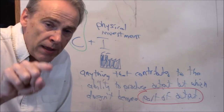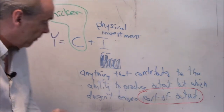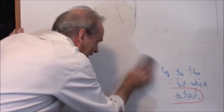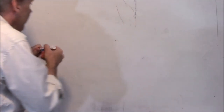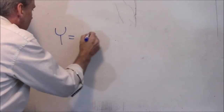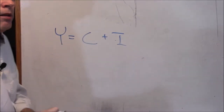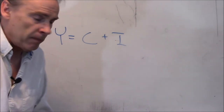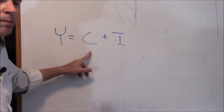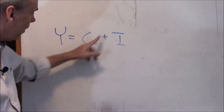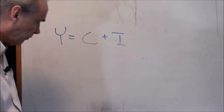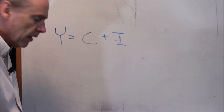Going back to our simplified world, there are only two kinds of final expenditures: consumption goods and investment goods. When consumers buy consumption goods or services, we put the number under C. When firms build a new factory, we put the number under I.